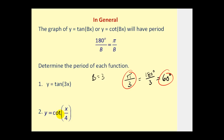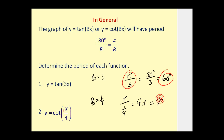For y = cot(x/4), you can think of this as (1/4)x, so the value of b is one fourth. In radians, the period is pi divided by one fourth, which is pi times the reciprocal, or pi times four — four pi. And in degrees, four pi radians is equal to 720 degrees. So we have the period in both radians and degrees.